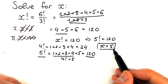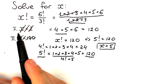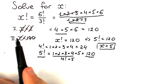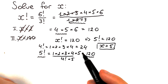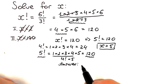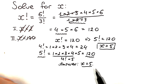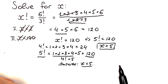So our answer is x equals 5. Not x equals 2, and not x equals 120 — those are the two most common mistakes. I hope you understood this explanation and learned something new about factorials. Don't feel bad if you got it wrong. I hope your answer is the same as mine — thank you for your time, have a great day, and see you in the next videos.